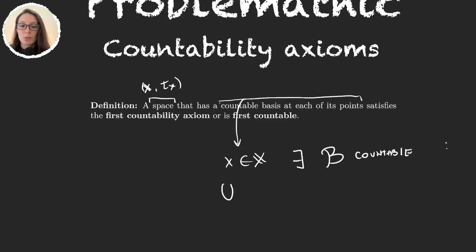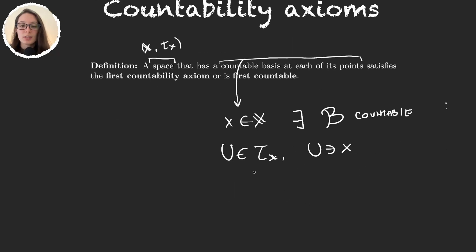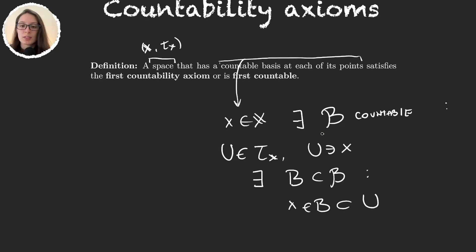...every time we take an element U in the topology that contains our element x — so whenever we take any neighborhood of x — there exists some set B in the collection such that x is an element of B and B is a subset of U. This collection B is a countable basis but it is local to the point x.